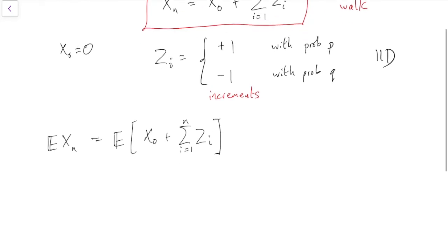But of course, expectation is linear, so we can take the expectation inside the brackets. Expectation X0, sum i equals 1 to n, the expected value of Zi. And because these Zi's are identically distributed, they all have the same expectation. So we can say they all have the same expectation as Z1. See? That's n lots of the expected value of Z1.